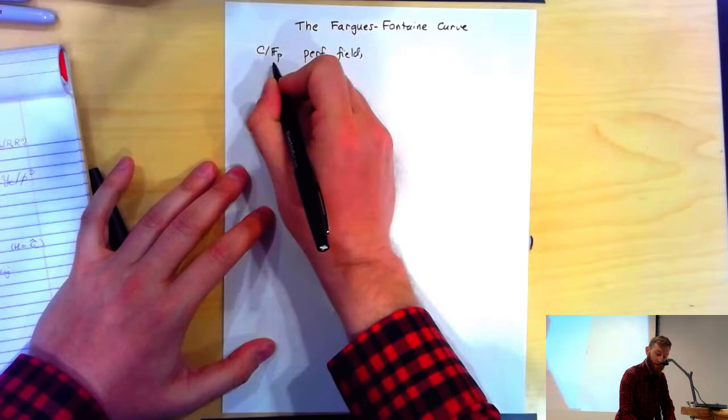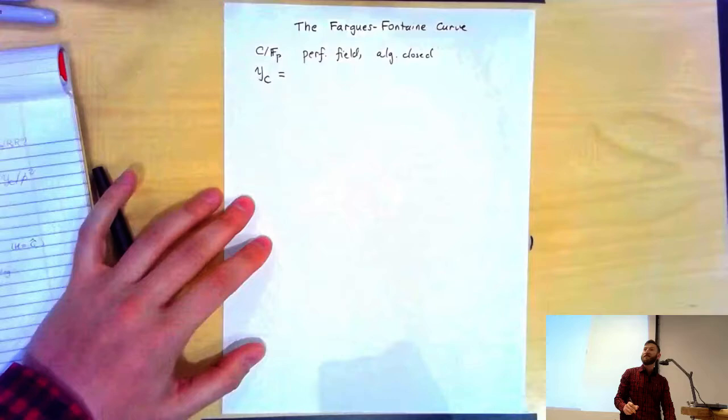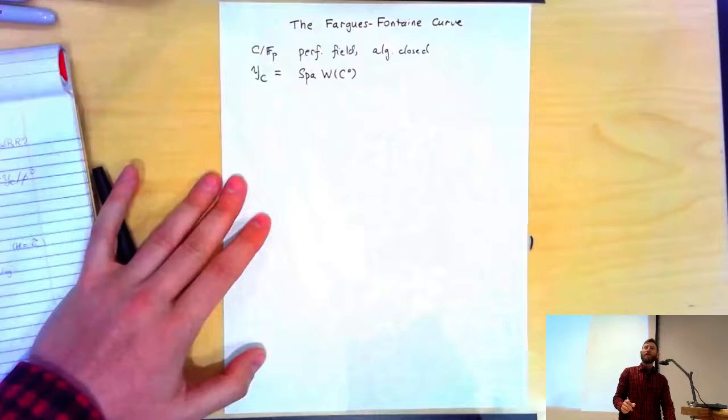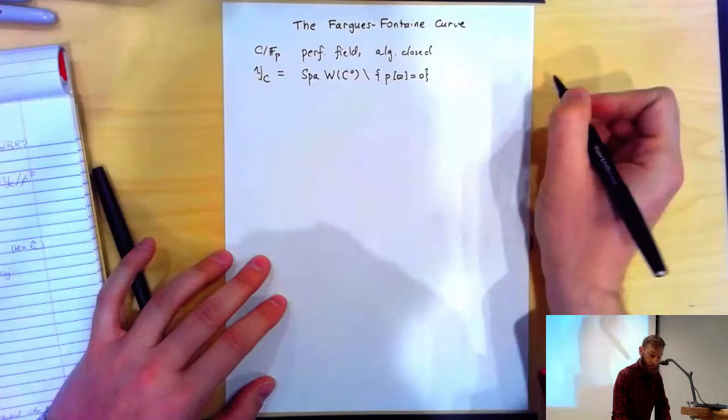Let's suppose C is a perfectoid field, characteristic P, algebraically closed. I had made a certain definition — that was of a certain adic space which I called script Y sub C. This was built out of the ring of Witt vectors of C°.